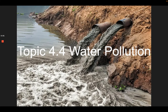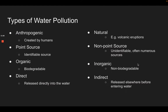Check out that water pollution. Some types of pollution are anthropogenic — that was a great example of point source pollution too, where we can clearly identify the source. It's hard to tell if it's going to biodegrade over time or if it will just persist in the ecosystem, but that is definitely a direct form of water pollution.